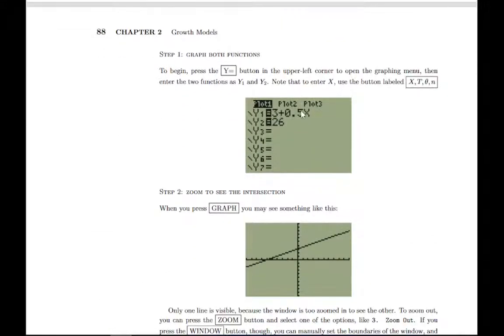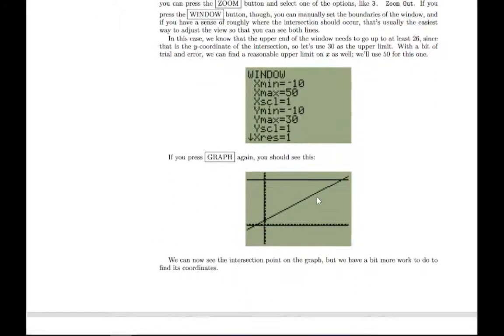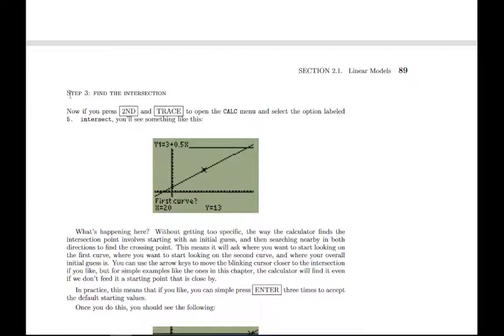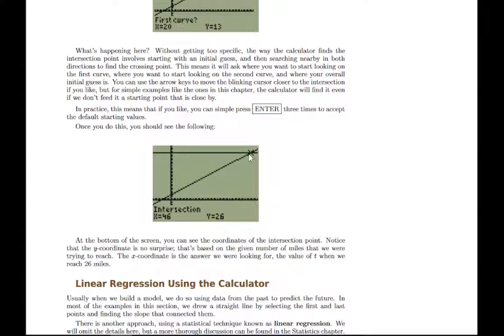On the calculator, you can graph both lines. If you zoom in and out appropriately, you can see the two lines and how they cross. Then to find the intersection, you can go back to that calculate menu and hit the intersect option. You can find that intersection happens when x is 46. It's using x to represent time and y to represent population or amount. When x is 46, after 46 weeks, the amount, the number of miles you can run, will be 26. Those coordinates tell you the answer to your question.